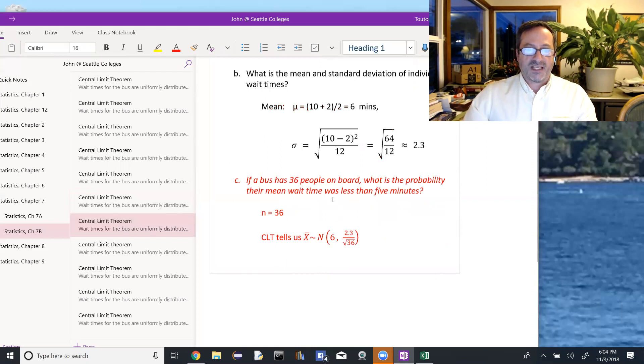So with that central limit theorem, we have n is 36. And the central limit theorem tells us that the distribution of x bar will be normal. So even though our original distribution was uniform, because n is bigger than 30, we can use the central limit theorem. And that'll tell us that the new distribution of the sample means is normal with the same mean, 6.